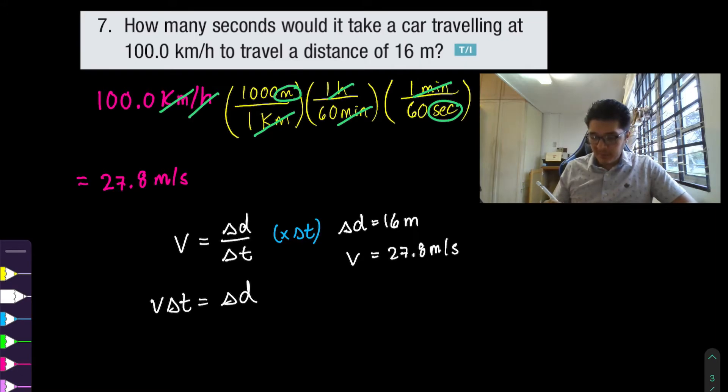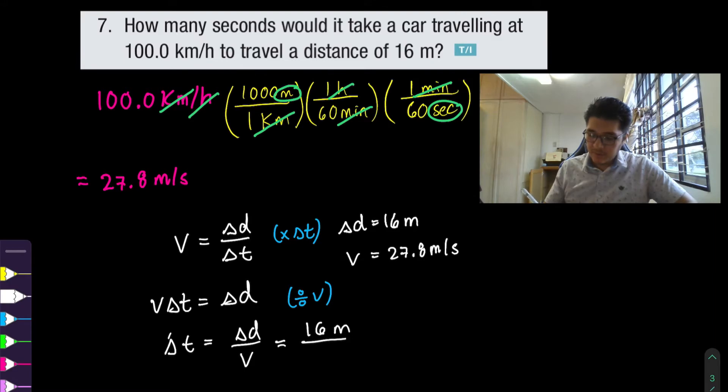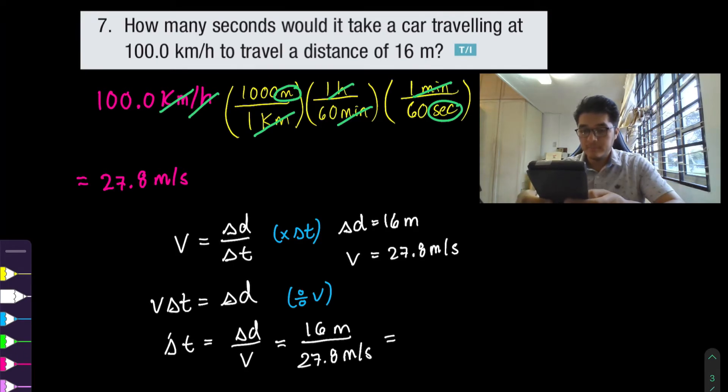So first multiply both sides by the change in time and then divide both sides by the velocity. And at this point all I have to do is put in the values that I'm given so 16 meters divided by 27.8 meters per second.